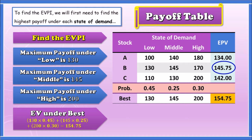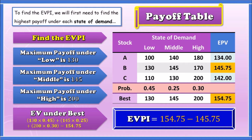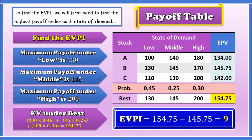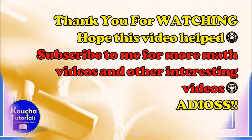Therefore, the EVPI is the difference between the expected value under perfect information and the highest expected value of returns. That's 154.75 minus 145.75, which gives us an EVPI of 9.